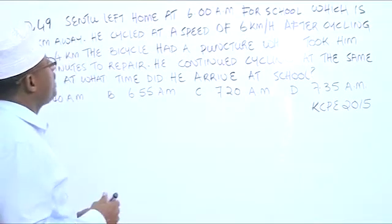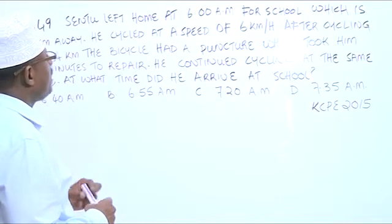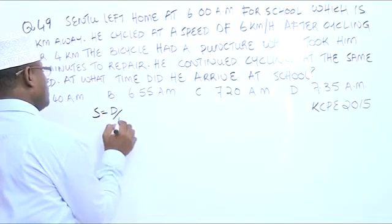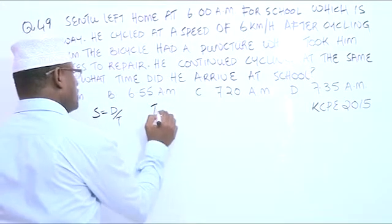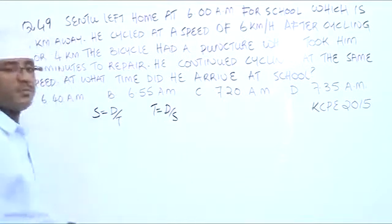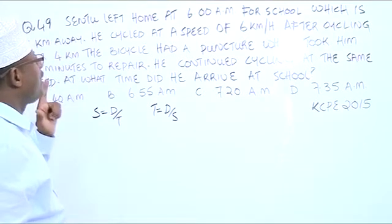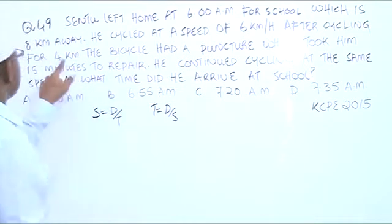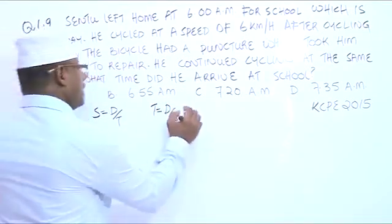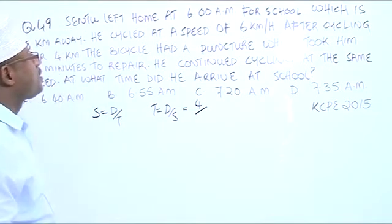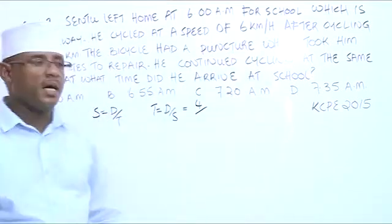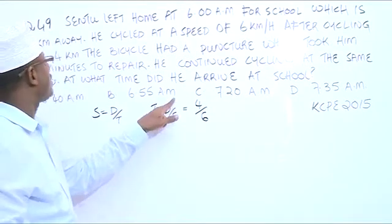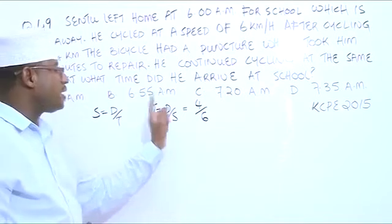Let us calculate the time taken from the start up to where he got the puncture. From our formula, speed is equal to distance over time, we can say that time is equal to distance over speed. How much distance did he cover up to the time he had a puncture? He had covered 4 kilometers, so our distance here is 4 kilometers. The speed — he was cycling at 6 kilometers per hour, so our speed is 6. This is in hours, because the distance is in kilometers and the speed is kilometers per hour, so the time we are going to get is in hours.